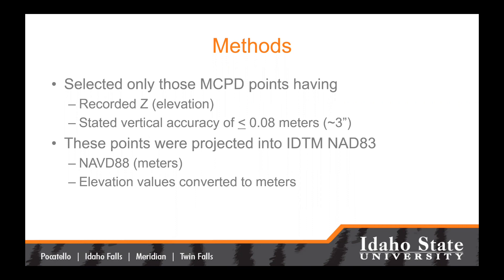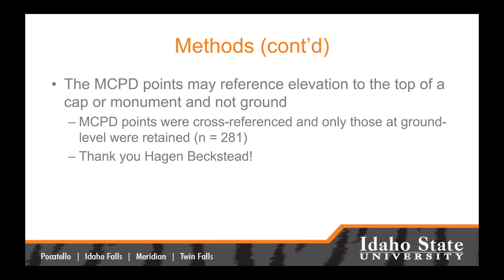A lot of the work that surveyors are doing uses the state plane coordinate system in feet, and if X and Y are in feet, then normally Z is in feet also, so the conversion was made — a pretty simple conversion — so that elevation is in meters as well. The MCPD points may reference elevations at the top of a cap or monument and not the ground, so that's a little bit problematic. I enlisted the help of Hagen Beckstead, our geodetic analyst at the GIS Center, to help identify those MCPD control points that were actually on the ground. We cross-referenced and only those on the ground were retained, leaving us with 281 points at this point in the study.